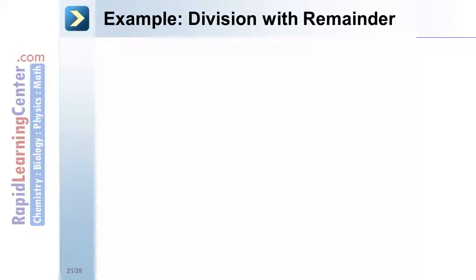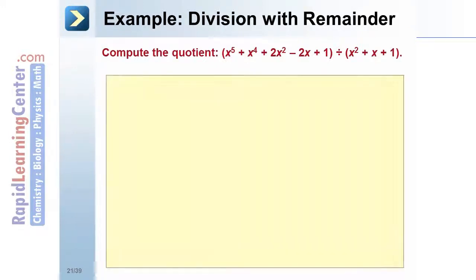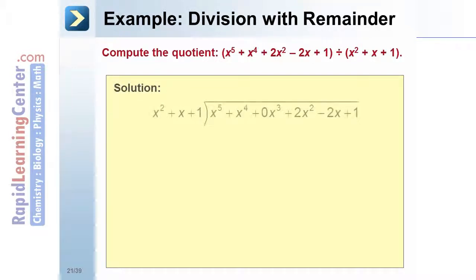Example: Division with remainder. Compute the quotient of quantity x to the fifth plus x to the fourth plus 2x squared minus 2x plus 1 divided by the quantity x squared plus x plus 1. Solution: First, set the polynomials up in long division form. Insert 0x cubed for the missing term in the dividend. Second, divide the first term of the dividend by the first term of the divisor to get the first term of the quotient, x cubed.